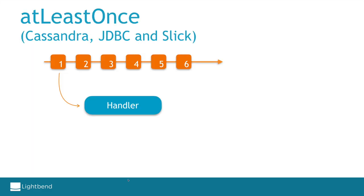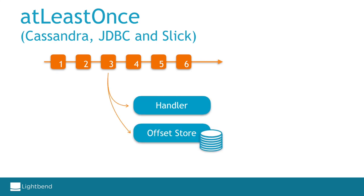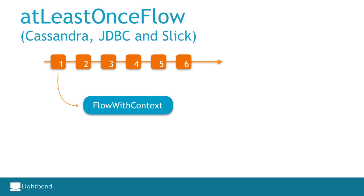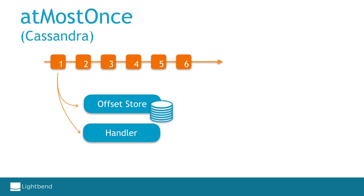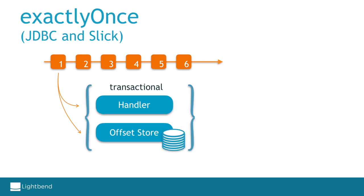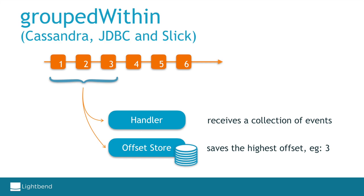Let's quickly cover each strategy. For at-least-once, the envelopes are delivered to the handler one by one and from time to time the offset gets persisted — for instance, every three events. This strategy has the advantage that we don't hit the offset store on each envelope. The at-least-once flow variant has the same semantics except that you build your projection using a stream flow with context instead of a projection handler. At-most-once is only available for Cassandra projections — on each envelope it persists the offset and then delivers the envelope to the handler; if the handler fails the envelope won't be re-delivered. When using a relational database you have the option to persist the projected model and the offset in the same transaction — this is only available for JDBC and Slick. Finally, the group-within variant accumulates envelopes up to a threshold and delivers them in batches; the handler receives a collection of envelopes and the offset store saves the highest offset.